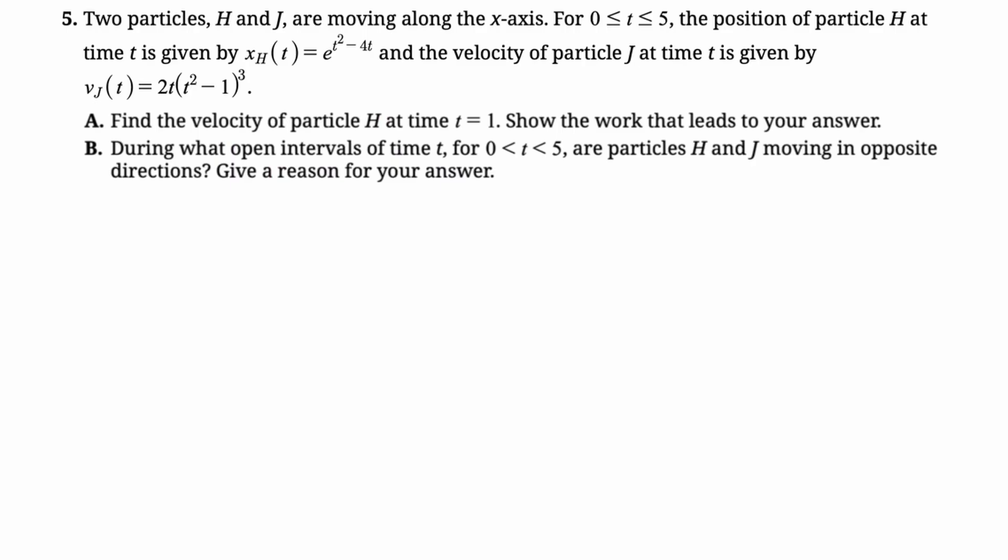Two particles, H and J, are moving along the x-axis. Between 0 and 5, the position of particle H at time t is given by x_H(t). If you've watched any of my other videos, you know that I hate this subscript thing that they've been doing recently, but I guess it's here to stay. So x_H(t) is e^(t²-4t), and the velocity of particle J at time t is given by v_J(t) equals 2t(t²-1)³. So one of them is position, one is velocity.